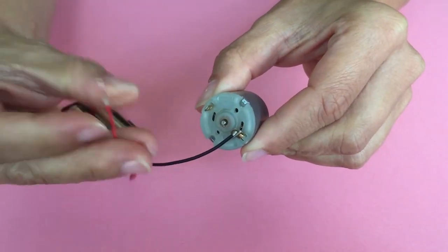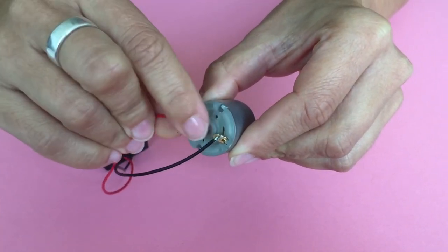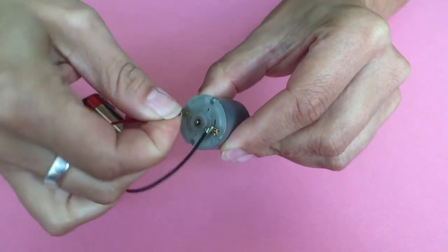Then connect the second wire to the other metal eye of the motor the same way. Make sure to fold the wire firmly.